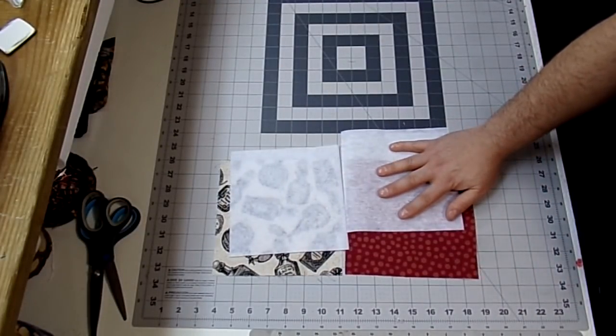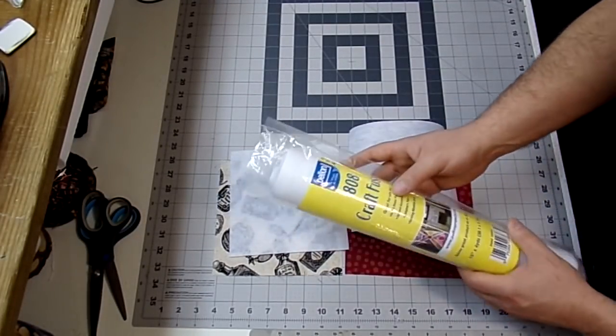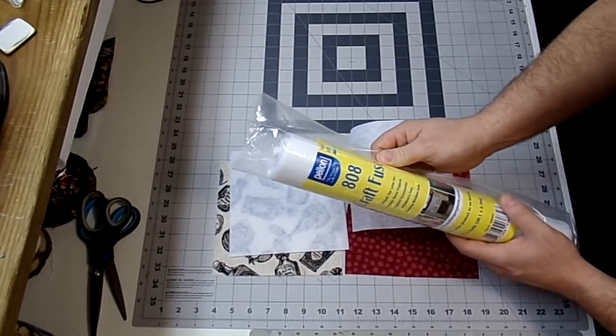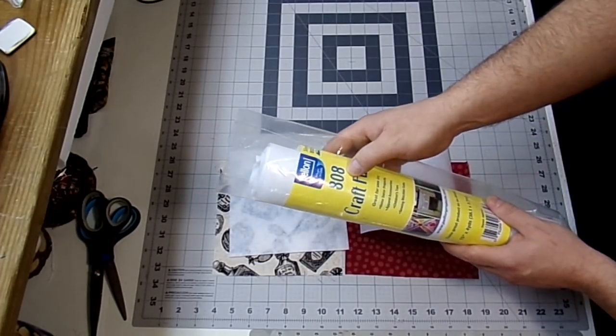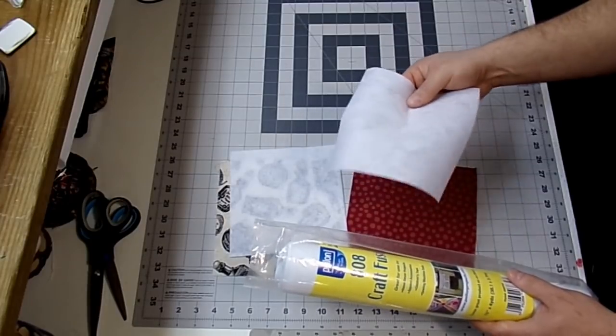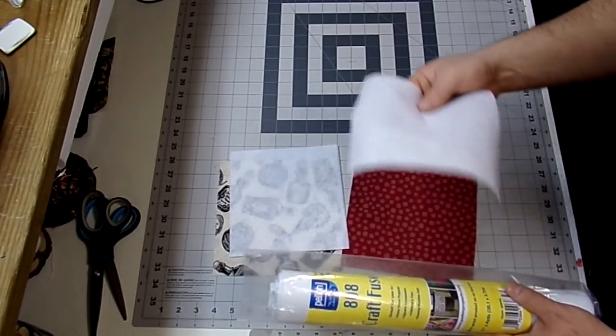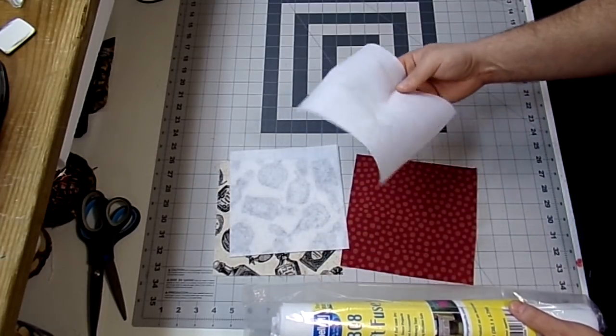I'll also be using a seven inch square of this craft fuse. I got this at Walmart, I think it was like six bucks. It's from Pellon, and it's 808. I like the stiffness of the craft fuse. If you have a lighter weight, you can certainly use that, or just leave it out.